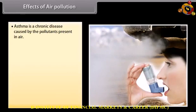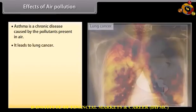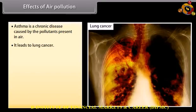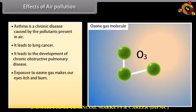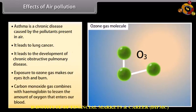Effects of air pollution. Asthma is a chronic disease caused by the pollutants present in the air. It leads to lung cancer. It leads to the development of chronic obstructive pulmonary diseases. Exposure to ozone gas makes eyes itch and burn. Carbon monoxide gas combines with hemoglobin to lessen the amount of oxygen that enters our blood.